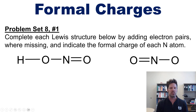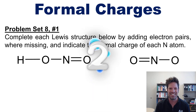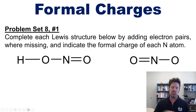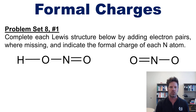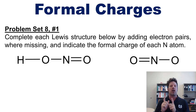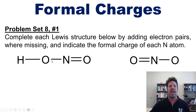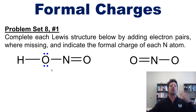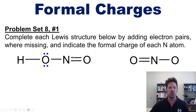Let's move on to another formal charge related problem: complete each Lewis structure by adding missing electron pairs and then indicate the formal charge of each nitrogen atom. For this problem, all you need to do is add lone pairs wherever needed to complete every atom's octet — with the exception of hydrogen, which only needs a duet. For example, the oxygen with a single bond on each side has four electrons total, so it needs two lone pairs to complete its octet. The nitrogen surrounded by three bonds has six electrons in bonds and needs one lone pair to complete its octet.